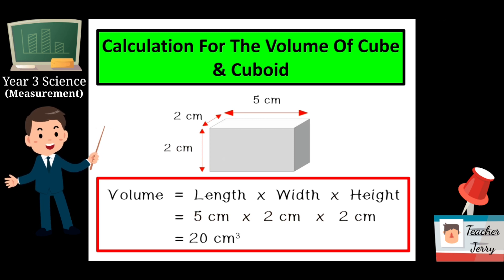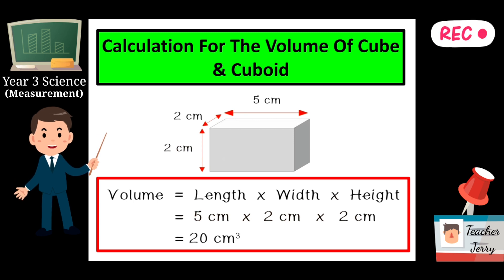By using the formula, the length is five centimeters multiplied by the width two centimeters and multiplied by the height two centimeters, equals to twenty cubic centimeters.